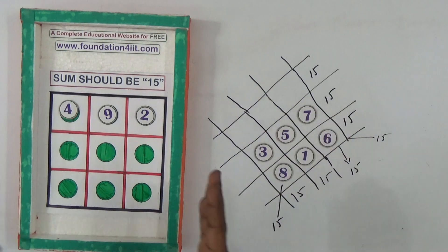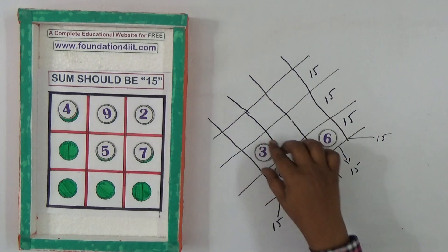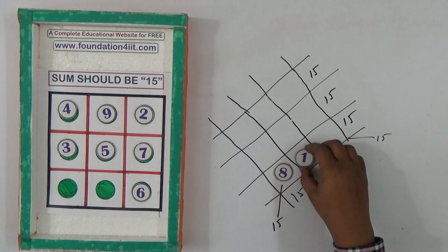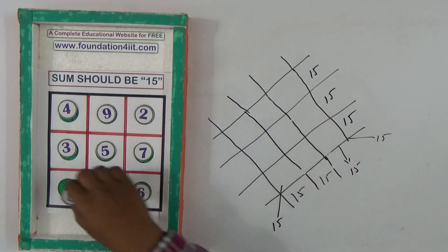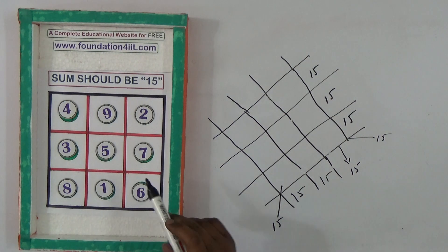So now this is little cross, not just straight, then followed by 7, 5, and 3. Then you can keep 6, 1, 8, that's it. So easy to remember also. This is the puzzle, sum should be 15.